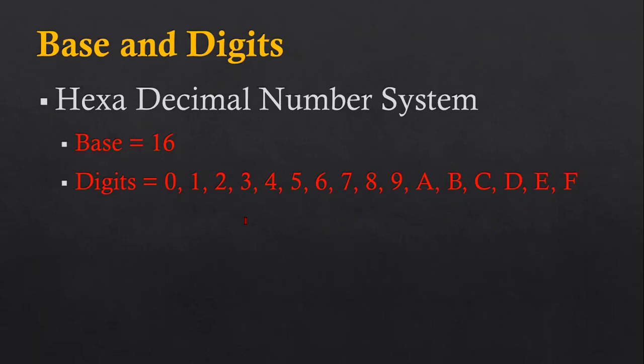You can use all sixteen digits to frame a number in hexadecimal. When creating a number in any number system, you pick the digits available in that system as needed — for example, 123, 456, or 9ABC. And don't forget to write the base of the number system when converting from one system to another.